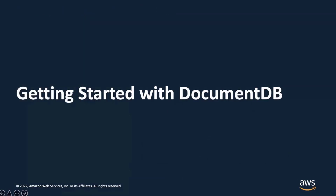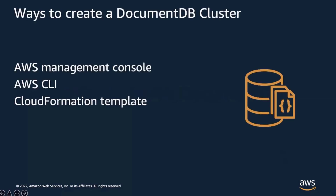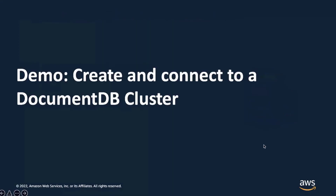With that, we're ready to go into our first of three sections on developing with DocumentDB: getting started. The first step is to ensure you have a cluster up and running. There are three ways to create a DocumentDB cluster: the AWS Management Console, which guides you through all options via a user interface; the CLI, commonly used with scripts or from a terminal; and CloudFormation Templates, great for infrastructure as code.